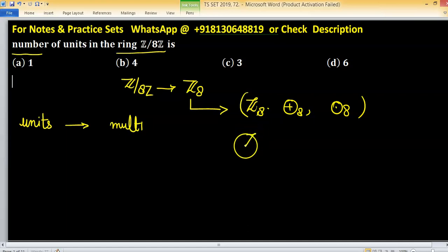Because Z8 star with respect to multiplication modulo 8 also forms group. And each element has inverse. So this Z8 is isomorphic to U8.